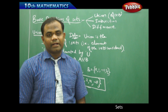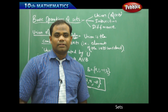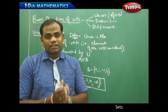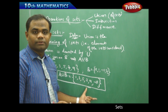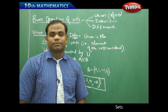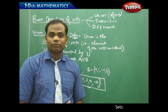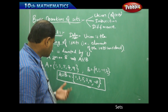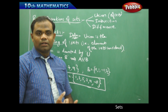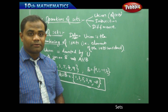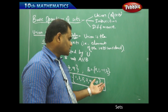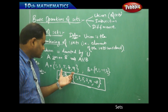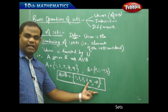Now let's see the Venn diagrammatic representation of union. How to represent union in a Venn diagram is also very important, because when understanding sets we use both the algebraic approach and the Venn diagrammatic approach. Taking the same example from before — set A and set B — let's draw the Venn diagrammatic representation, since the same example will serve to illustrate union of sets through the Venn diagram.